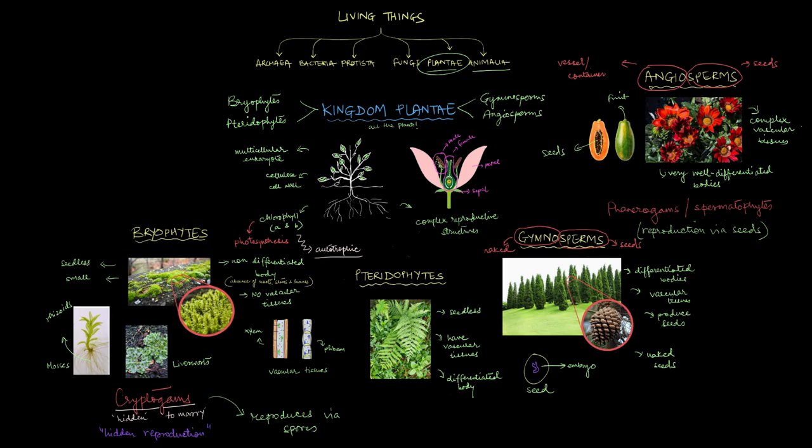Those are the different types of plants you'll find in the plant kingdom. These are just the very basic characteristics of these plants. If we dive into each one of these divisions separately, we're going to find out just how unique each of these plants are — and nothing is more unique than the way they reproduce. We'll keep that for another video.